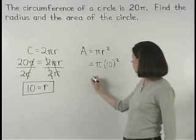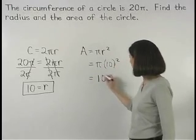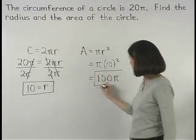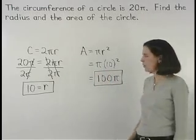or 100 pi. So the area of the circle is 100 pi.